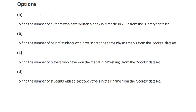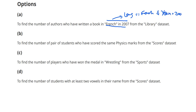Option A: to find the number of authors who have written a book in French in 2007 from the library dataset. This doesn't require a nested loop, because the condition 'language is French and year is 2007' can be expressed using a single AND operator. Both conditions can be kept together, so option A is not the suitable one.